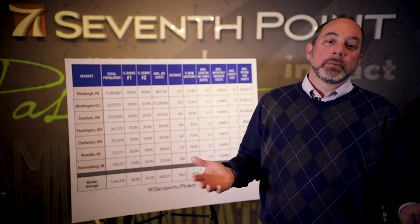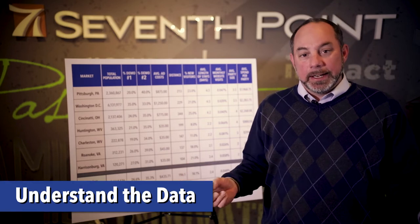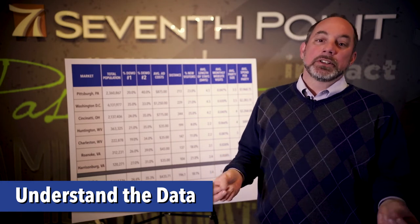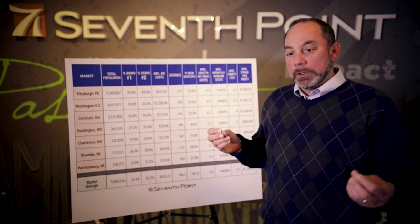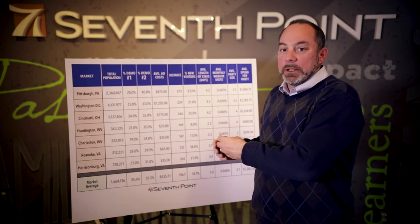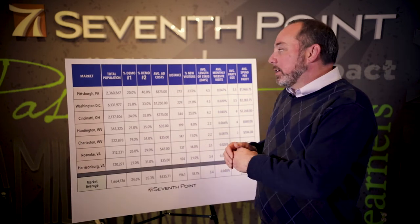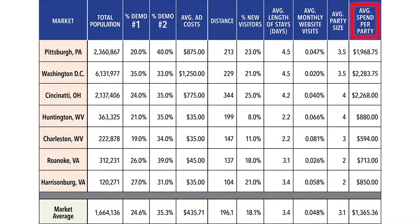Understanding where your customers are coming from is a key to understanding what markets you're going to want to advertise in. Now that you know where your customers are coming from, you need to understand the data that your company has that tells you how each of these markets perform against each other. For example, in this instance, we're taking a look at a destination marketer who gets customers from various cities. So we're looking at things like average spend per party, average party size, average length of stay, the distance away from each of these markets, the total population of these markets, and of course the demographic percentage of your target audience in each of these cities.